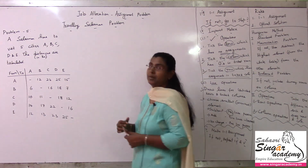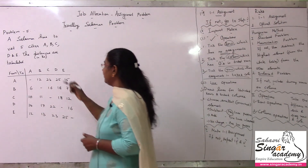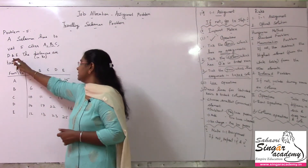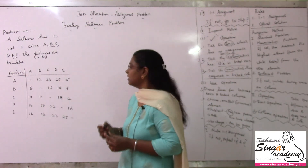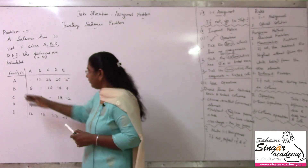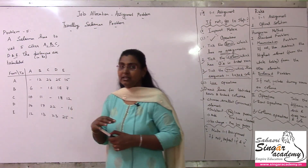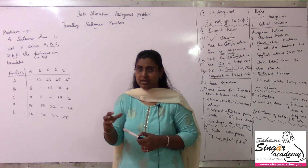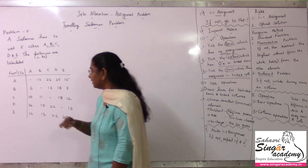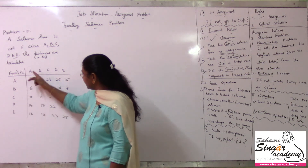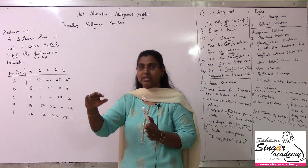Here the salesman has to visit 5 cities: A, B, C, D, and E. The distances in kilometers are tabulated. So if you check here, I have 'from cities' and 'to cities' — these are all the 5 cities. In this case, there are 5 cities column-wise and the same 5 cities row-wise. This is a specific problem.